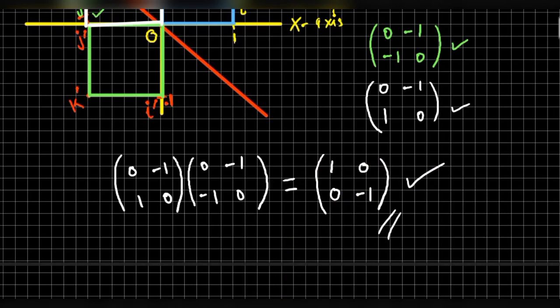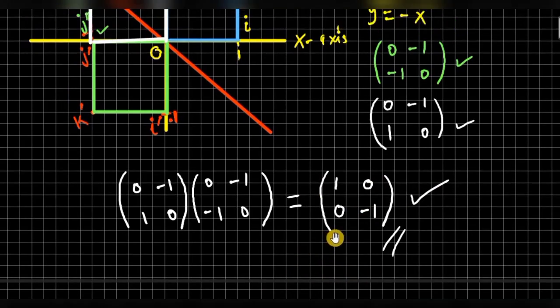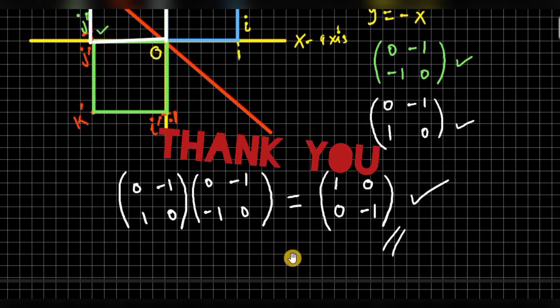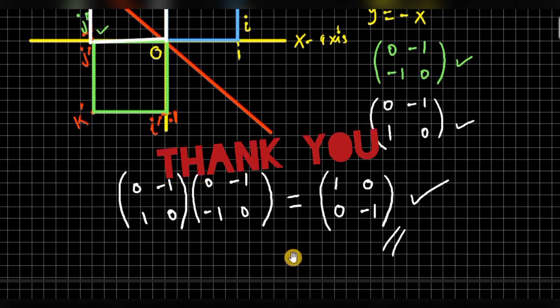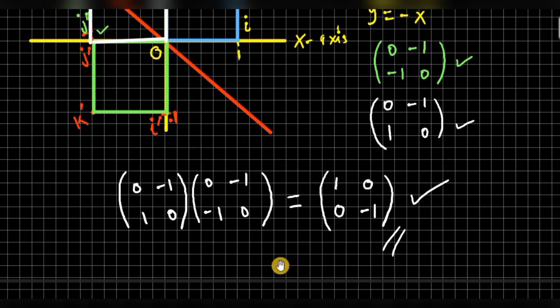And that is how we can use the unit square to determine the transformation matrix of a given transformation. That is it for this question. Thank you for watching — hope to see you in the next video.